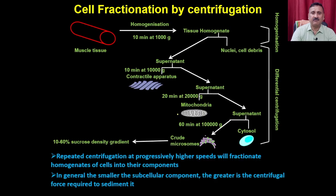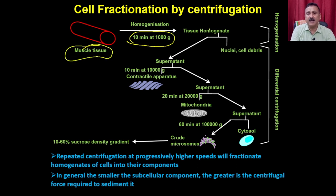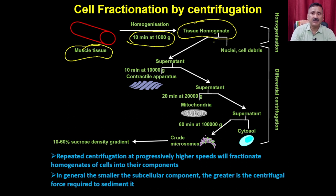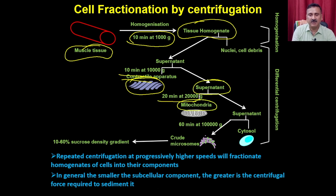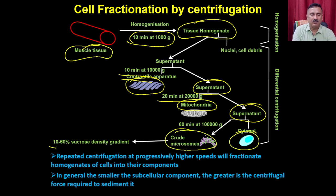Another example of cell fractionation uses muscle tissue — the scheme is almost the same but the source is different. After homogenization, running at 1000 g for 10 minutes removes contractile material. The supernatant run at 20,000 g separates mitochondria. Running at 1 lakh g produces crude microsomes and cytosol, and then density gradient centrifugation can separate out the remaining organelles.